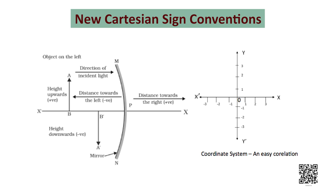For instance, the object is always placed on the negative x-axis, i.e. on the left side. Therefore, the object distance will always be negative. Similarly, if an image is formed in front of the mirror, the image distance will be taken along the negative x-axis and so will be negative. However, if the image is formed behind the mirror, the image distance will be measured along the positive x-axis and so it will be taken as positive.